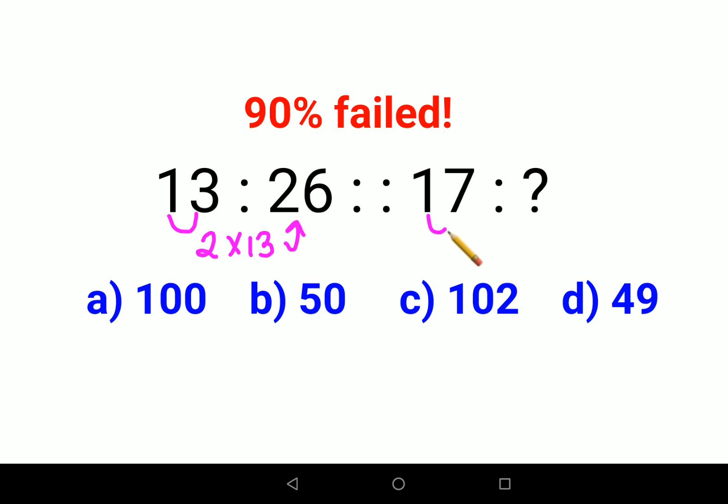So here we'll see the difference is 6. And 6 when multiplied by 17 gets you 102. So the answer for this particular question is 102.